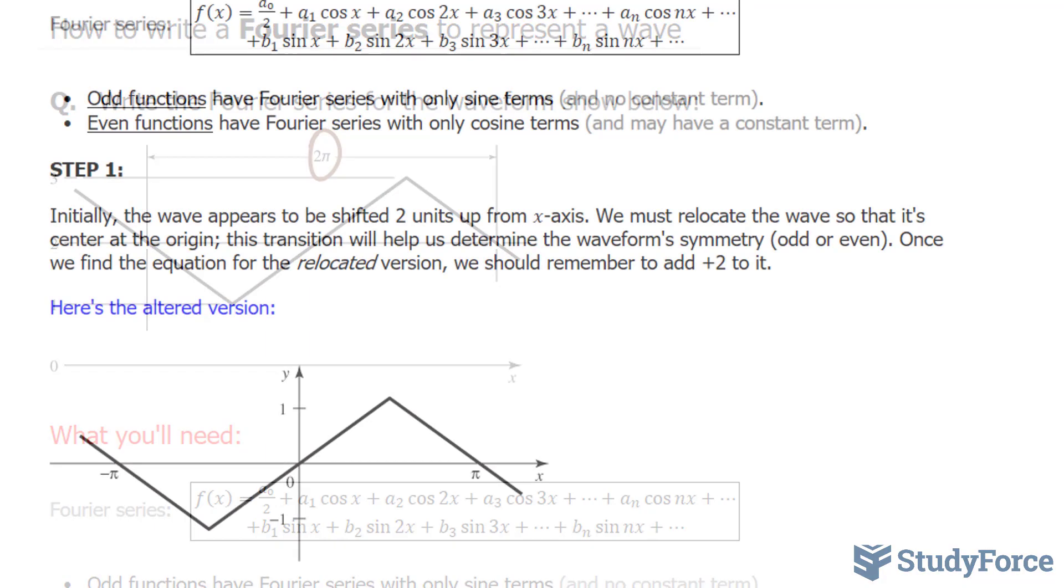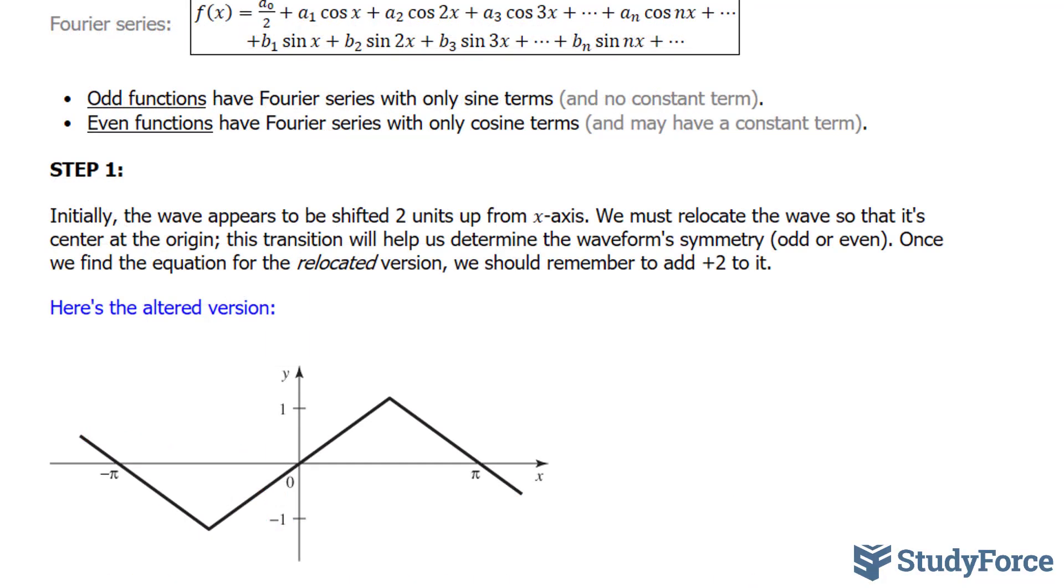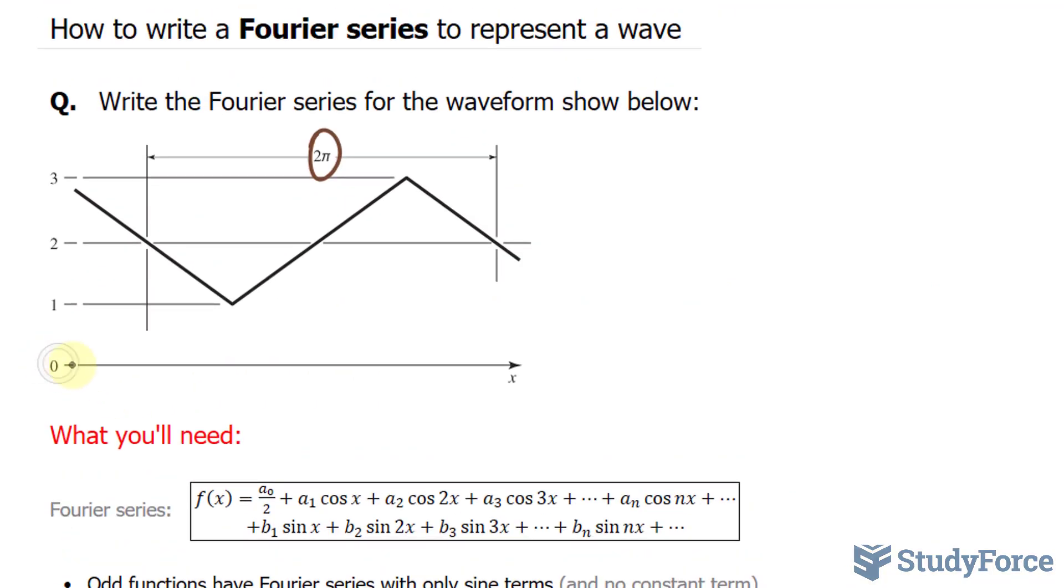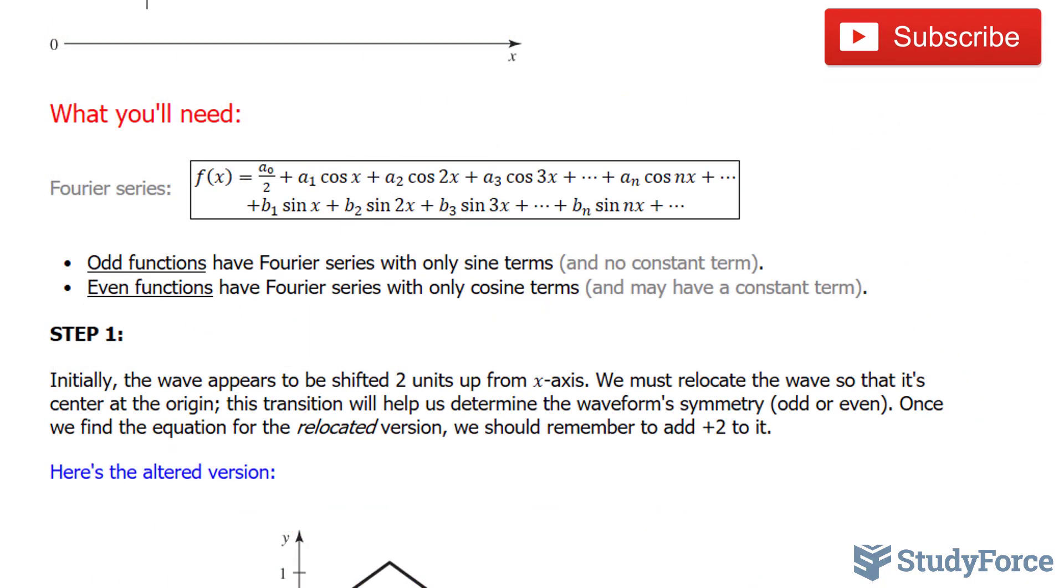In step number one, initially the waveform appears to be shifted two units up from the x-axis. This is the x-axis, and it has been translated upwards. We must relocate the wave so that it centers at the origin. In fact, this transition will help us determine the waveform symmetry, which we discussed earlier.